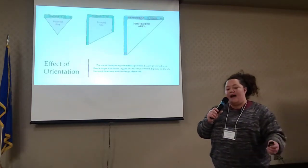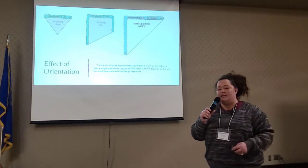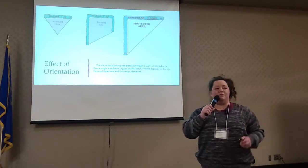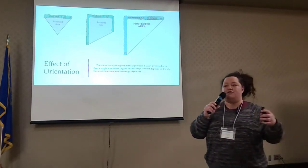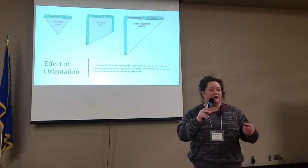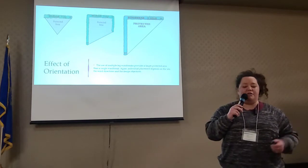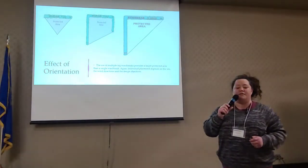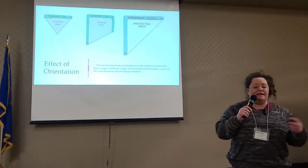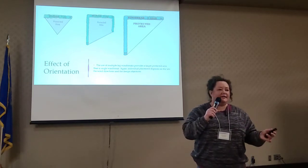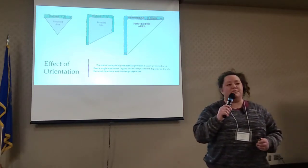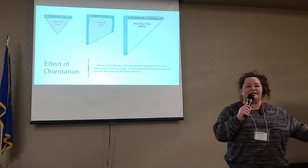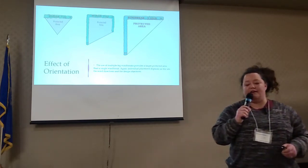The more sides you add to a windbreak, the better off you're going to be as well. You want to make sure it is covered on as many sides as you possibly can to make sure that snow is being distributed where you want it and not on top of their house, structures, or any area you're trying to protect. Two legs in North Dakota — usually preferable, three if you can. If you can get that south side, even better, but it's not necessary. That south and east side is mainly just for spring storms — here in March and April, if we get that spring storm, it usually comes from the south.